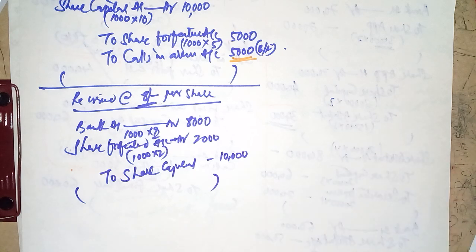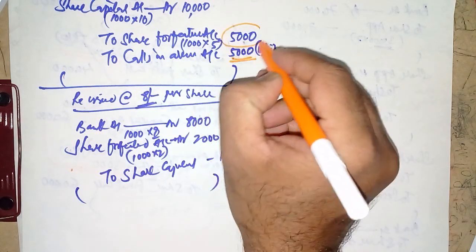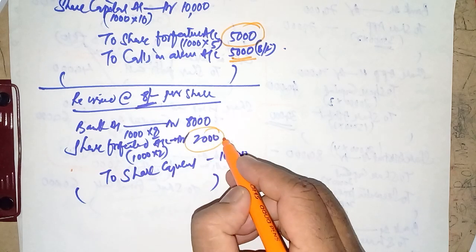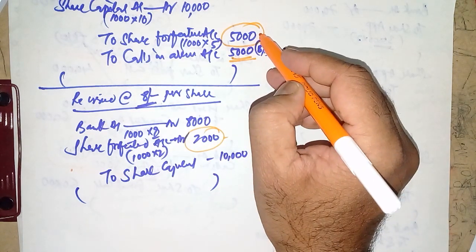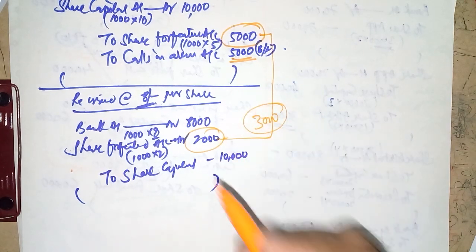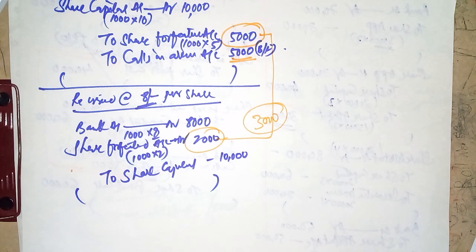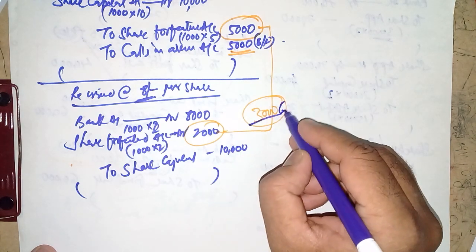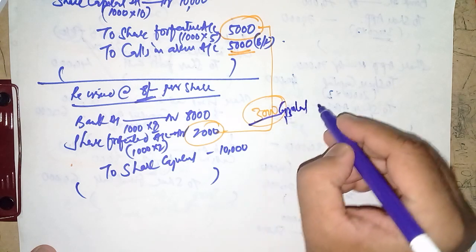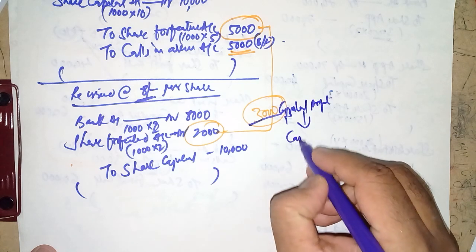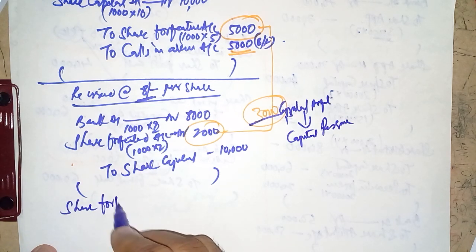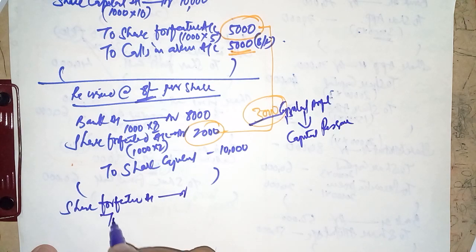After reissue, the Share Forfeiture Account had ₹5000 credit balance. We debited ₹2000 for the discount, leaving ₹3000. This remaining balance is a capital profit and must be transferred to Capital Reserve. Entry: Share Forfeiture Account Dr. ₹3000 to Capital Reserve ₹3000.